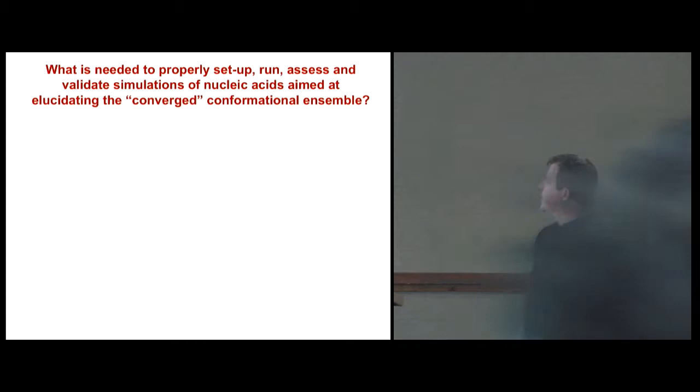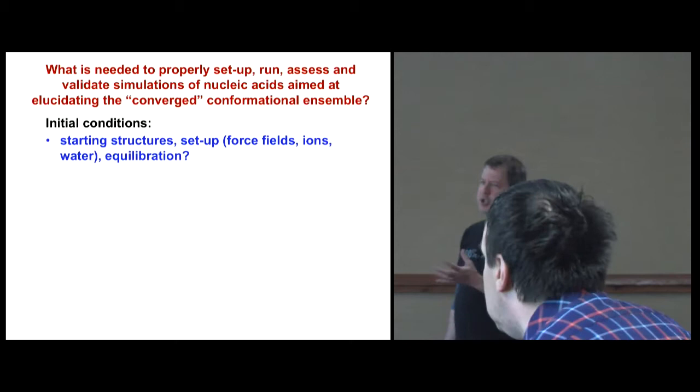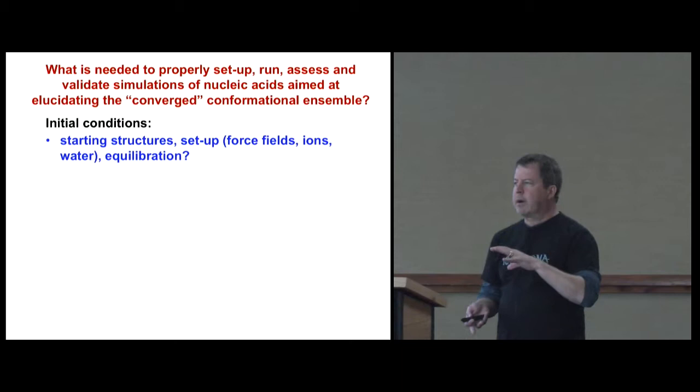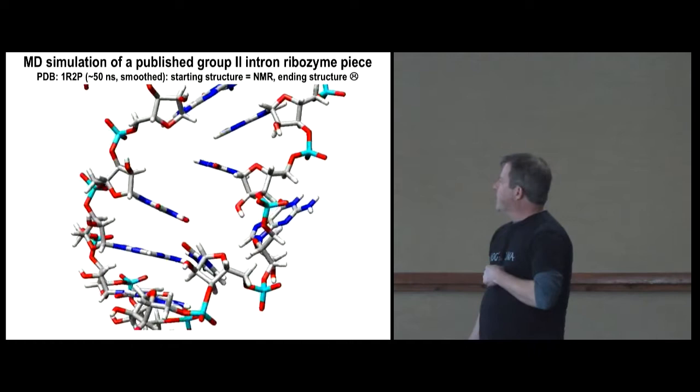So what do we need to do simulations right? We've got to properly set them up, run, assess, and validate the simulations, and understand what convergence means in terms of understanding conformational ensembles. And there's a lot of issues. You've got to get structures, ideally from the experimental database, that are well representative. You've got to set it up. You've got to add ions and water and have the right force fields. You've got to equilibrate it so it doesn't blow up.